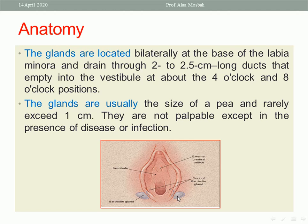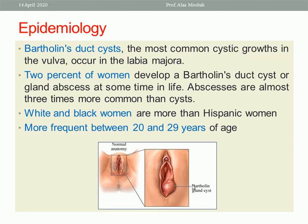The glands are not palpable except in the presence of disease, infection, inflammation, cyst, or abscess. Bartholin duct cysts are the most common cystic mass in the vulva, occurring in the labia majora. Two percent of women develop Bartholin duct cysts or gland abscess at some time in life. Abscesses are almost three times more common than cysts. White and Black women are more affected than Hispanic women, and occurrence is most frequent between 20 to 29 years of age.